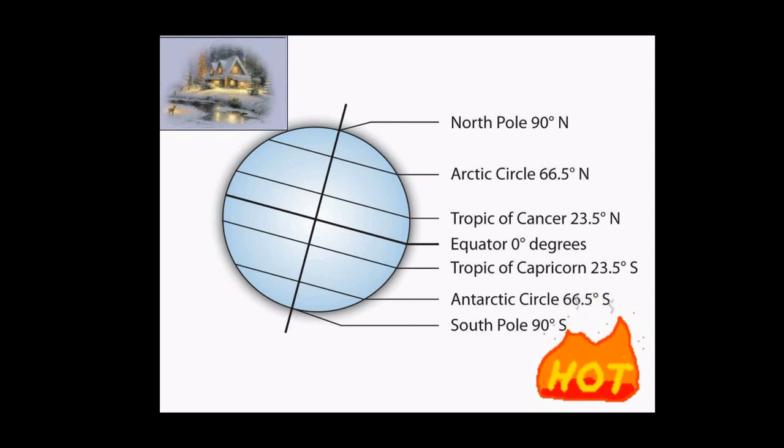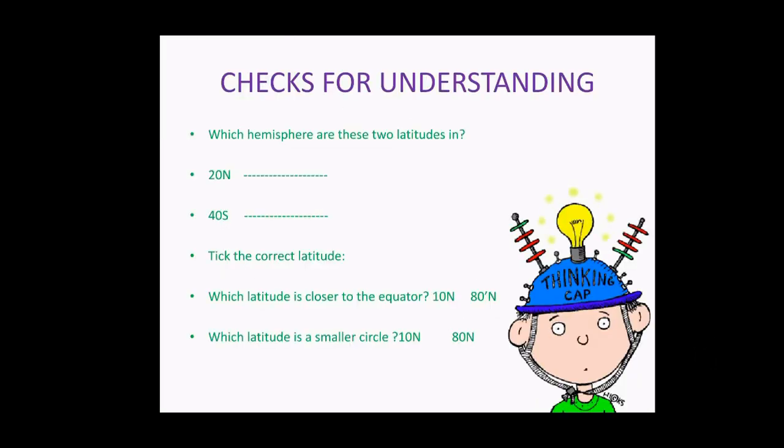And one more Northern Hemisphere important latitude is 66.5 degree latitude Arctic Circle. The same way, Southern Hemisphere latitude, 66.5 degree South, Antarctic Circle. And the northernmost point and the smallest circle is 90 degree N and it is referred as North Pole. The same way, Southernmost point is referred as South Pole and it has the degree of 90 degree S.